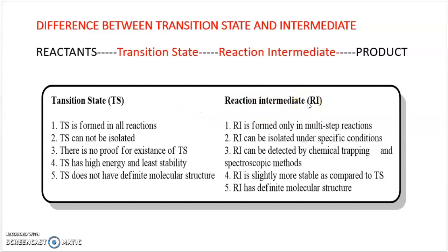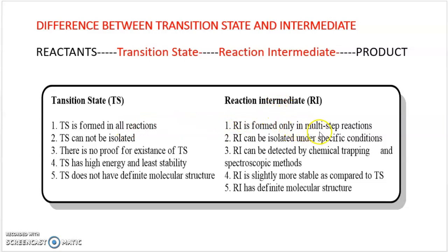Reactants are converted into products via transition state and reaction intermediate. In summary, transition state (TS) is formed in all reactions, whereas reaction intermediates (RI) are formed only in multi-step reactions. If a reaction is single-step, reaction intermediates are not formed; but if the reaction is multi-step, there is definitely formation of a reaction intermediate.